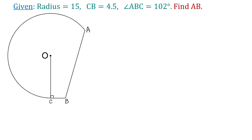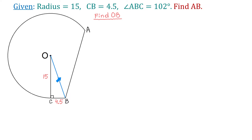To find AB, we will start by connecting points O and B. Now we have a right triangle BCO. In this right triangle, one side is 15 units, the other is 4.5, and we can find the hypotenuse using the Pythagorean theorem. We write: 15 squared plus 4.5 squared equals OB squared.